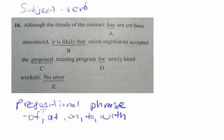We want to be on the lookout for these words, because a lot of times they'll be between a subject and a verb, and the prepositional phrase they create is going to fill up all the space between the subject and the verb. The one in this sentence is 'of the contract.'